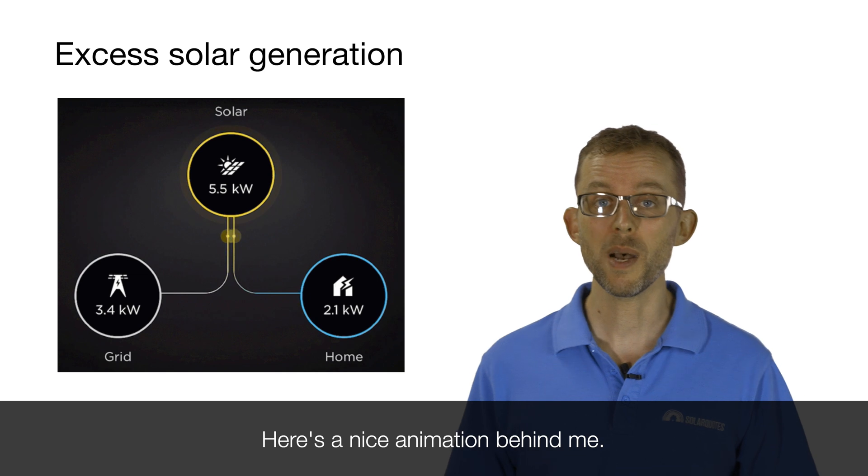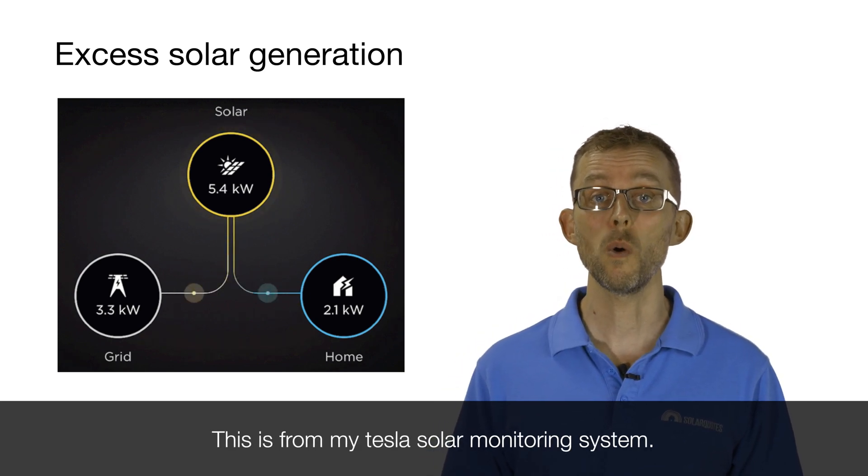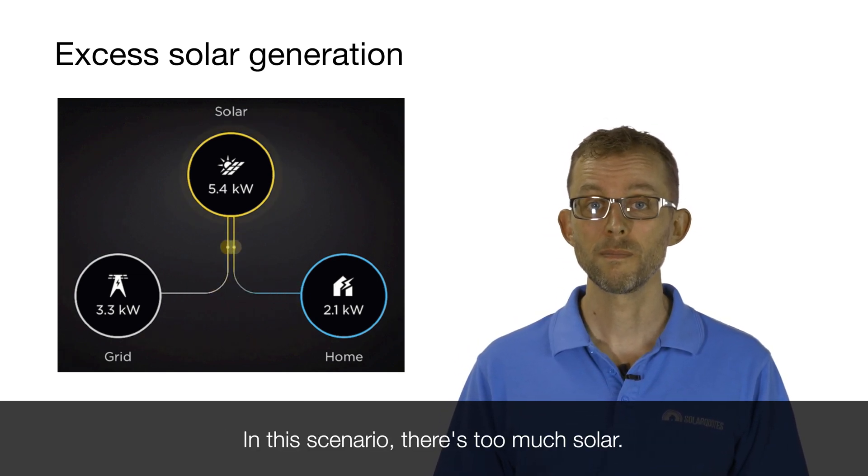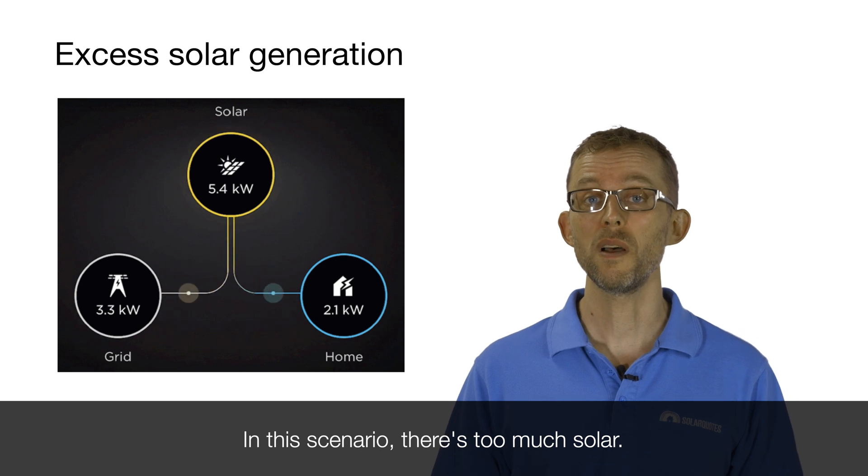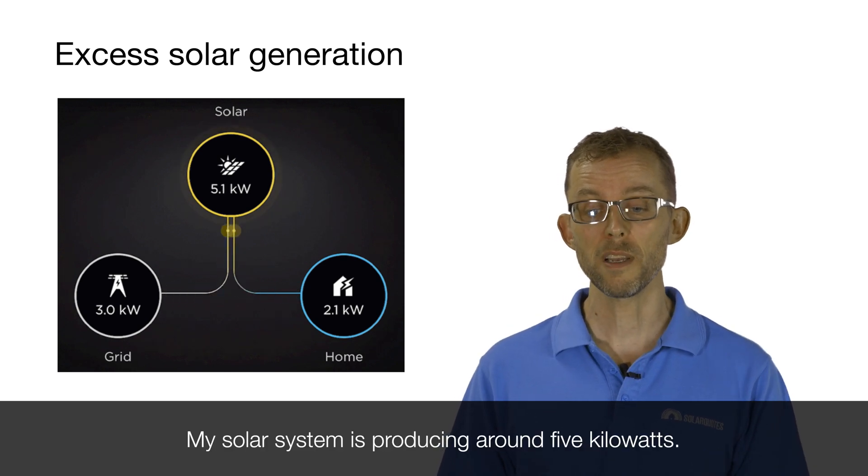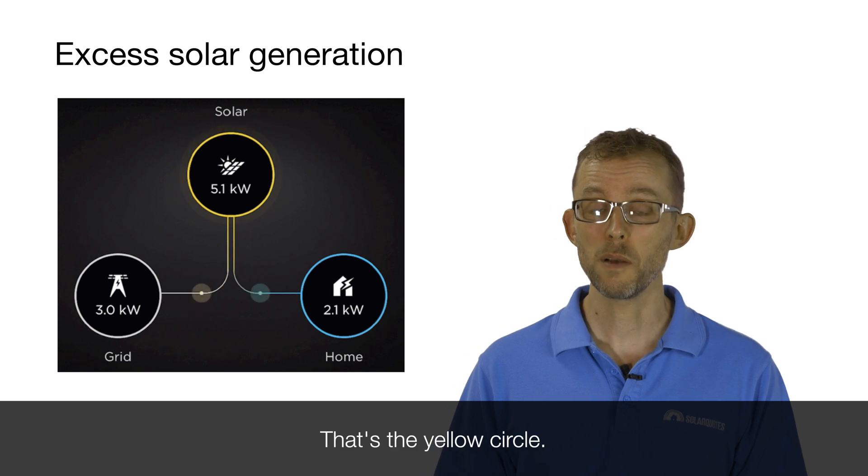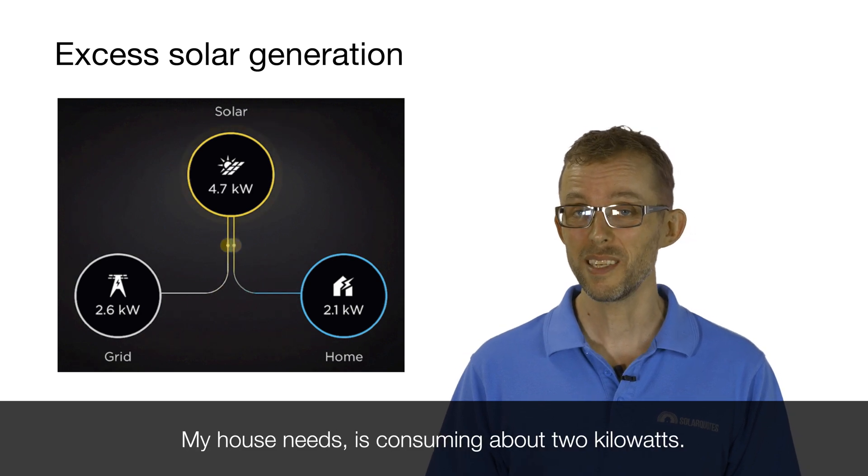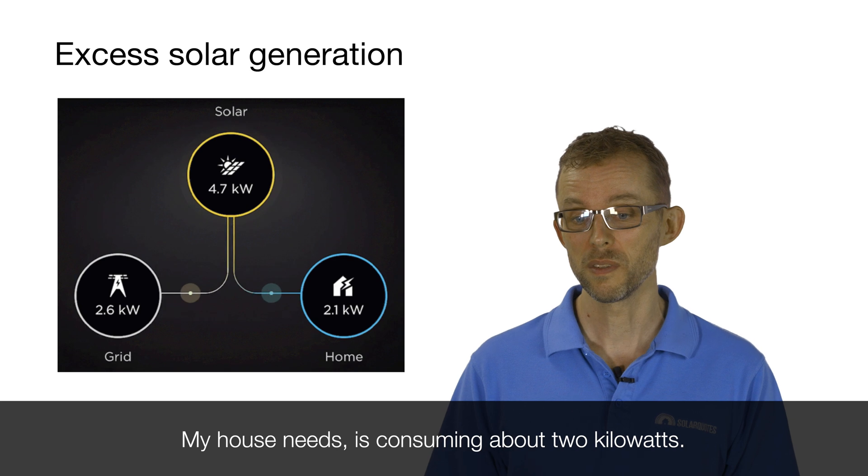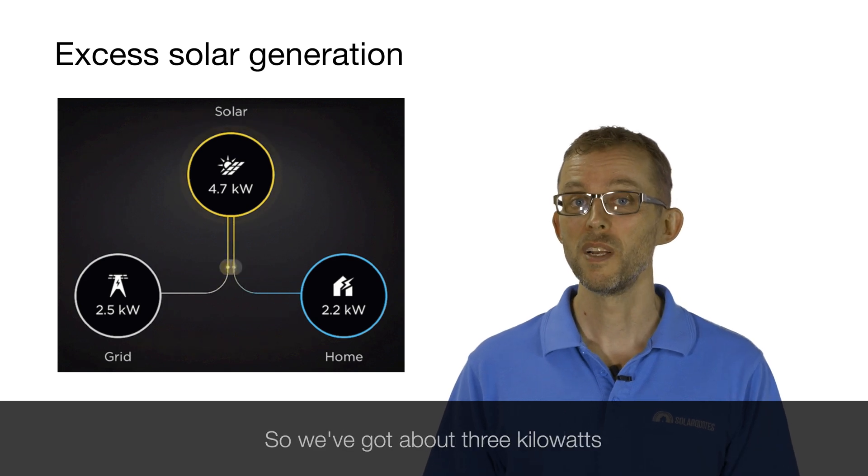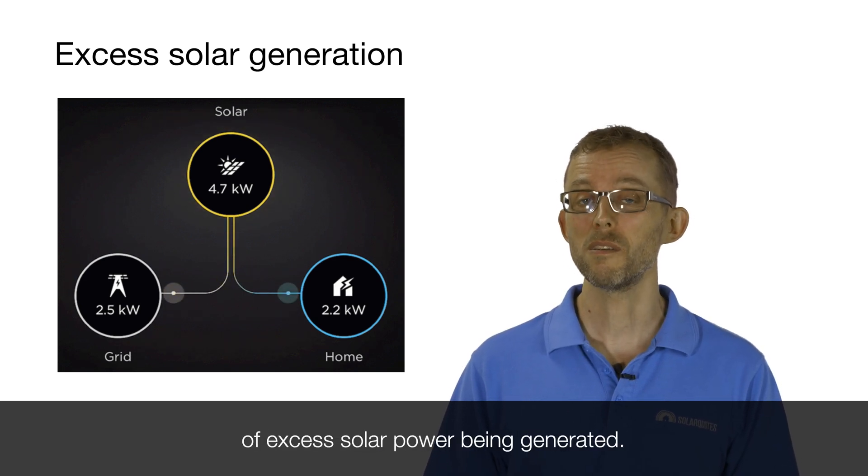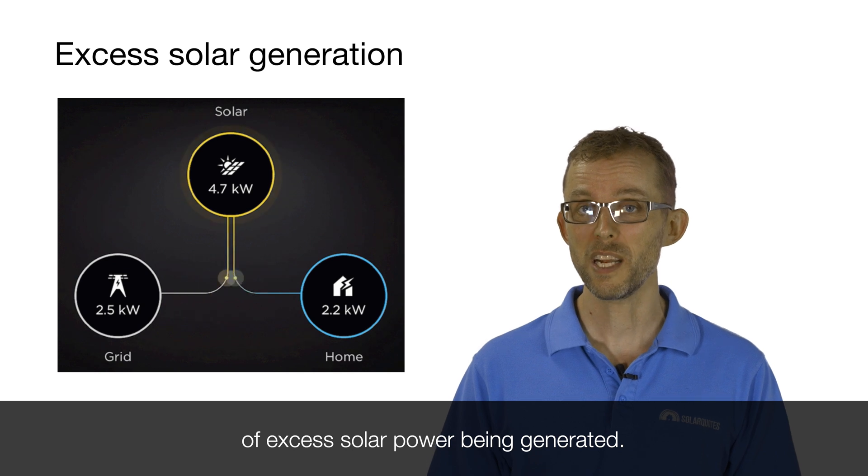Here's a nice animation behind me. This is from my Tesla solar monitoring system. In this scenario, there's too much solar. My solar system is producing around five kilowatts - that's the yellow circle. My house is consuming about two kilowatts - that's the blue circle.